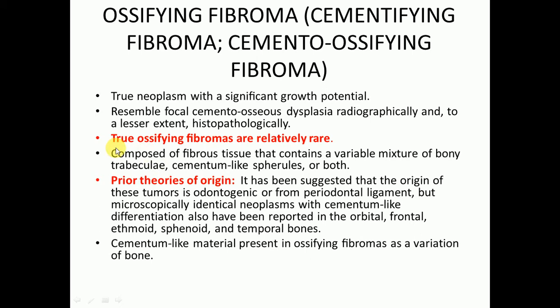It is composed of fibrous tissue that contains a variable mixture of bony trabeculae, cementum-like spherules, or both. There were theories of its origin suggesting ossifying fibroma arises from the periodontal ligament and has odontogenic origin. However, microscopically identical neoplasms with cementum-like differentiation have also been reported in the orbital, frontal, ethmoid, sphenoid, and temporal bones, leaving these theories open to question.